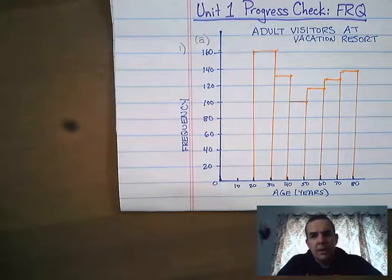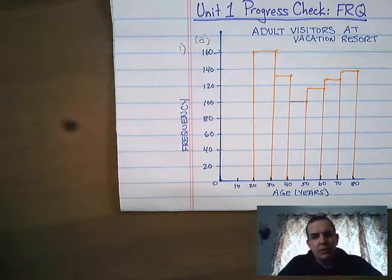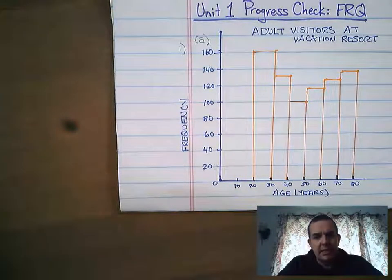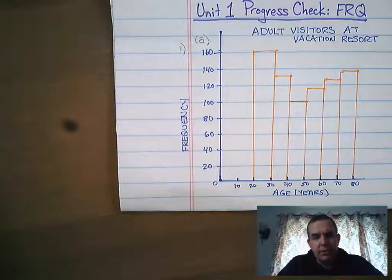The final part of this question asks you to verify whether the manager of this resort is correct in determining that the distribution of age at this vacation resort is roughly normal.